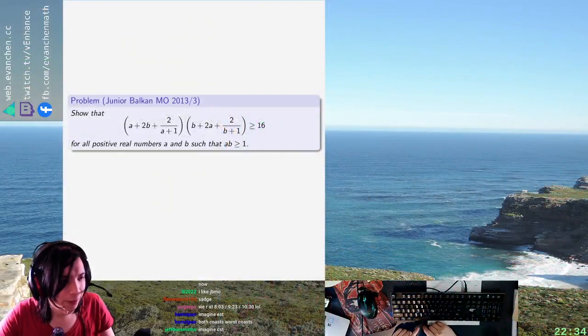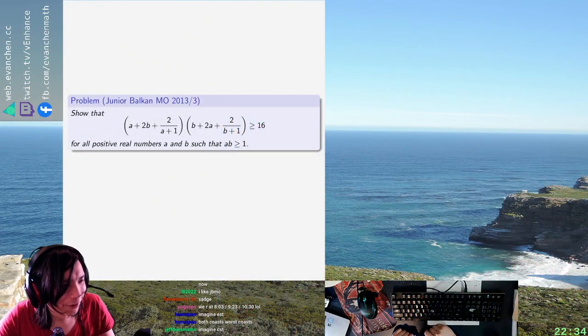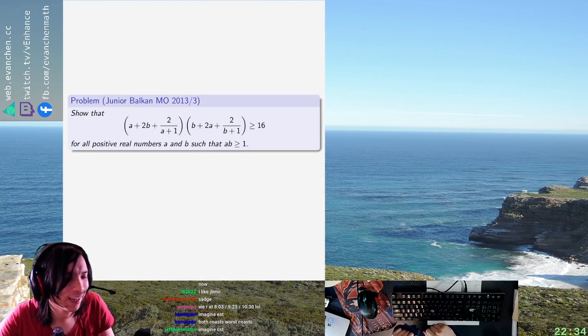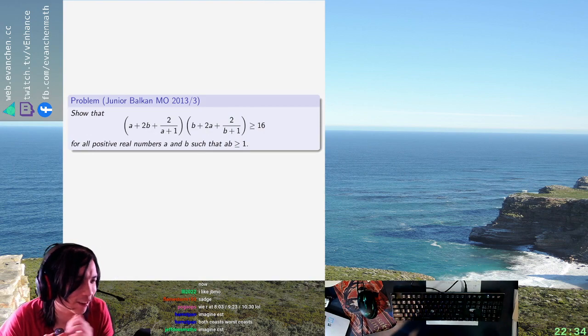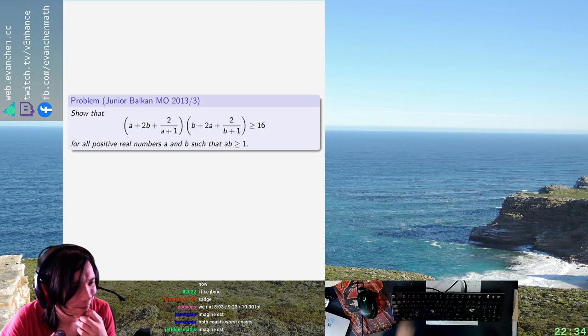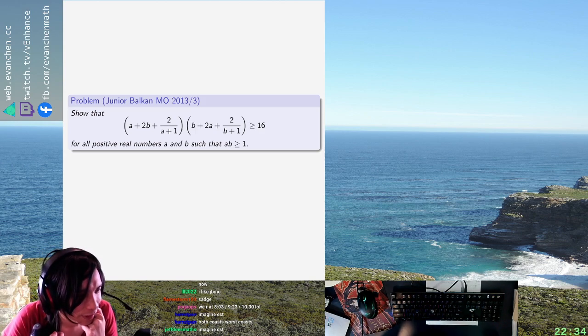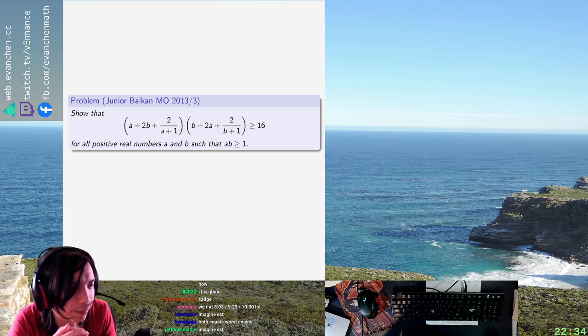We have a two-variable inequality, which is A plus 2B plus 2 over A plus 1, B plus... Okay, whatever. With, I guess, equality case when A equals B equals 1. Is this going to be something where A equals 2 and B equals half is also equality? There's no way, right?